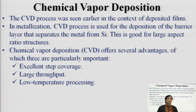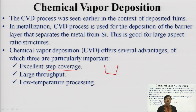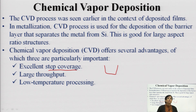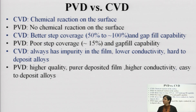Another technique is chemical vapor deposition (CVD), where a chemical reaction occurs on the surface. CVD is advantageous for large aspect ratios, offering excellent step coverage — uniform horizontal and vertical deposition — higher throughput, and lower temperature processing. CVD is generally used for barrier layer deposition separating metal from silicon, and for polysilicon gate and tungsten plug deposition.